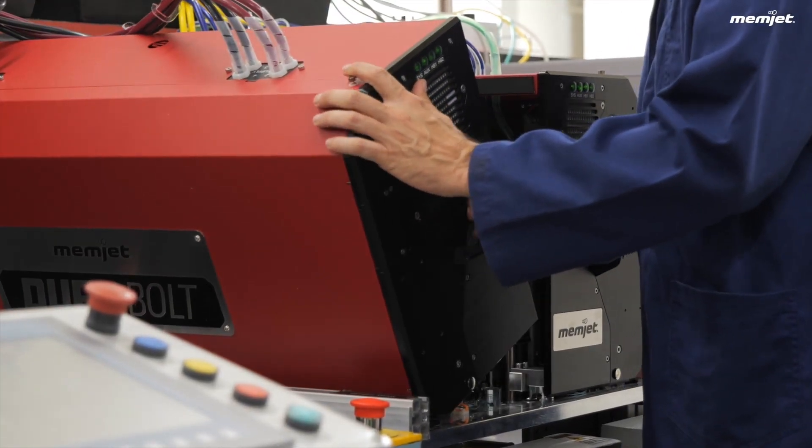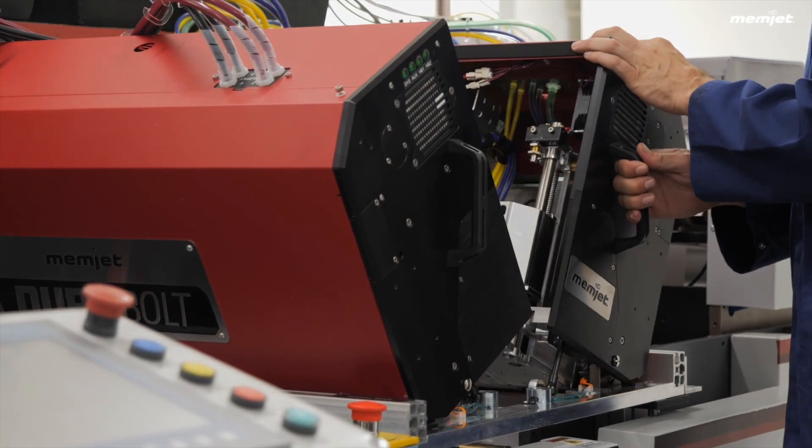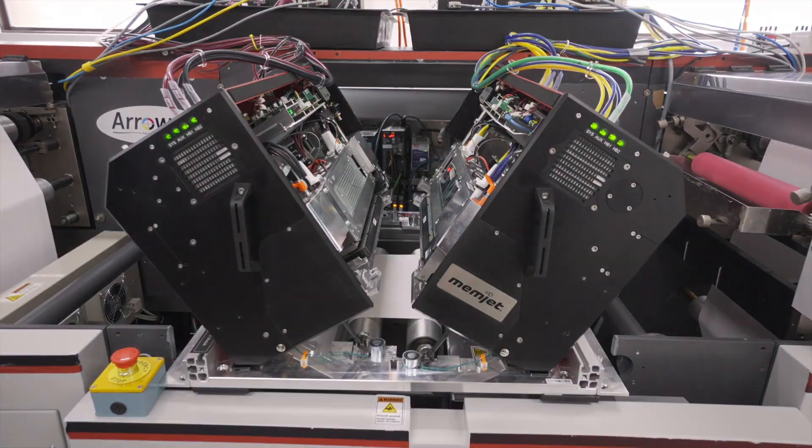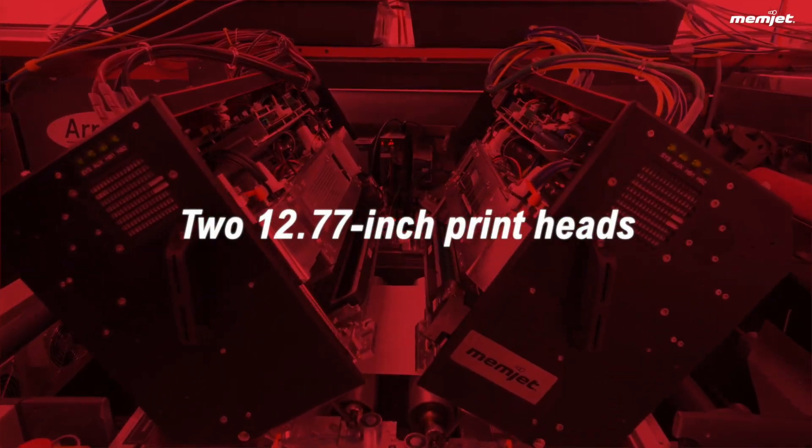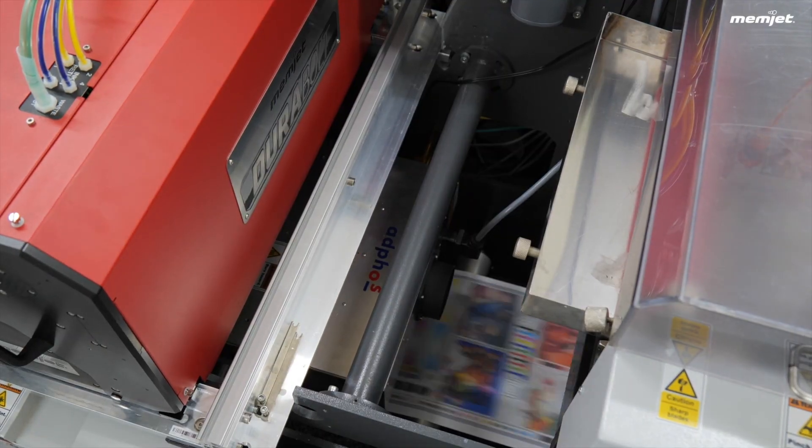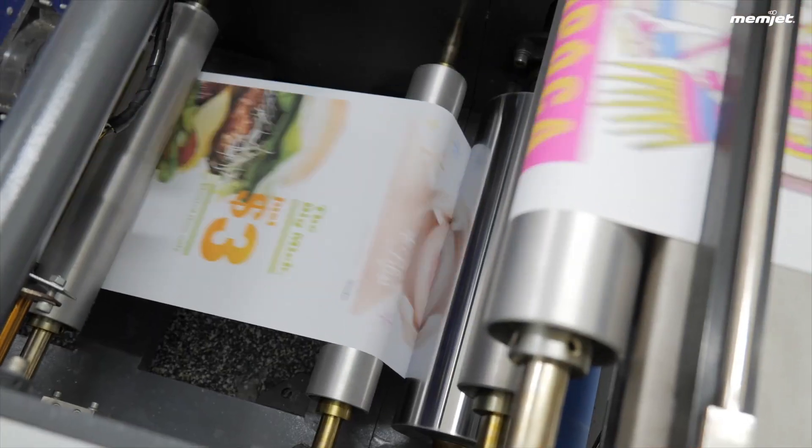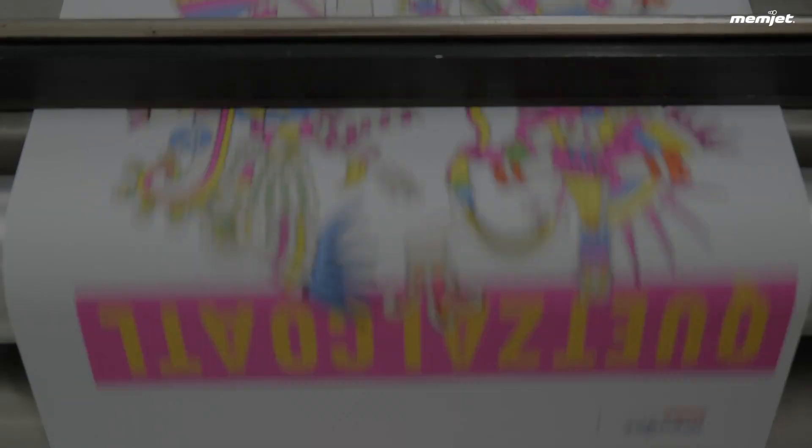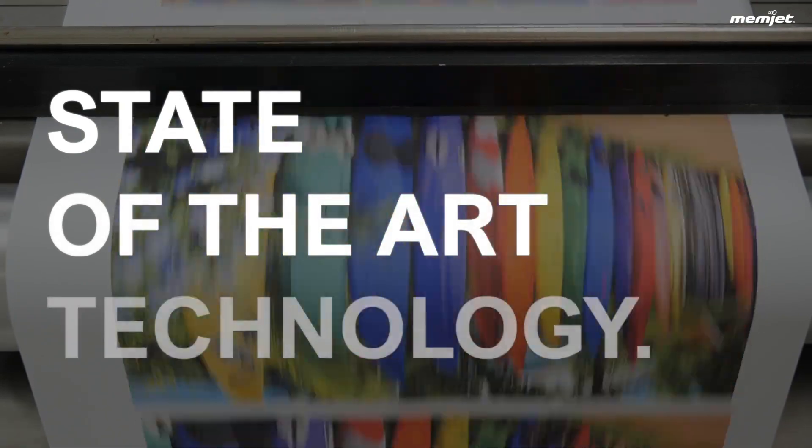Duribolt's flagship model, the 325C, has a tandem head design which includes two 12.77-inch print heads. When it comes to speed, Duribolt delivers outstanding print speeds of up to 450 feet per minute by adopting Memjet's state-of-the-art print head technology.